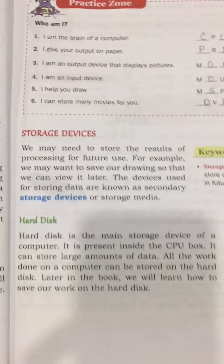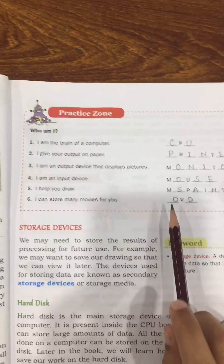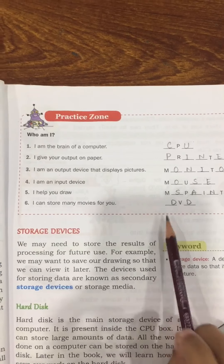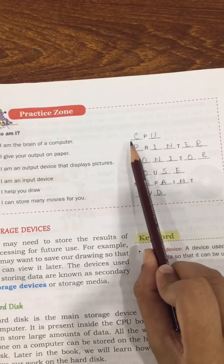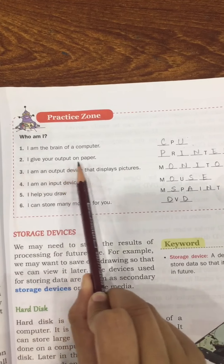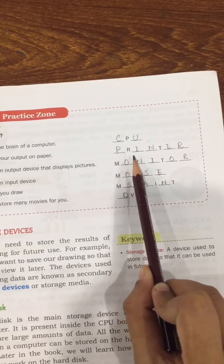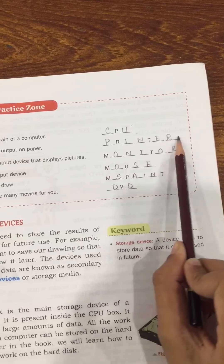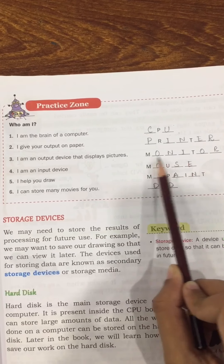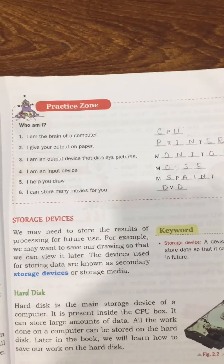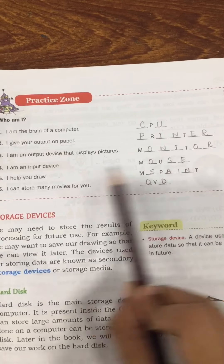On the next page, page number 13, some questions are given in which you have to complete the blanks. 'I am the brain of a computer' — that is the CPU. 'I give your output on paper' — which gives us results on paper — that is the printer, P-R-I-N-T-E-R. 'I am an output device that displays pictures' — which shows results on screen — that is the monitor, M-O-N-I-T-O-R.